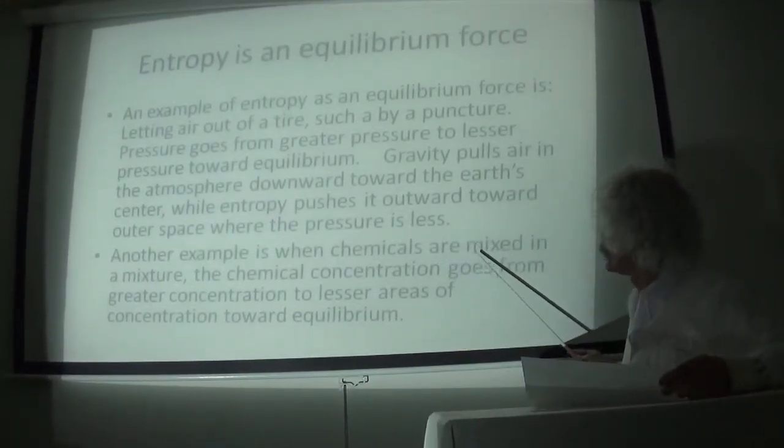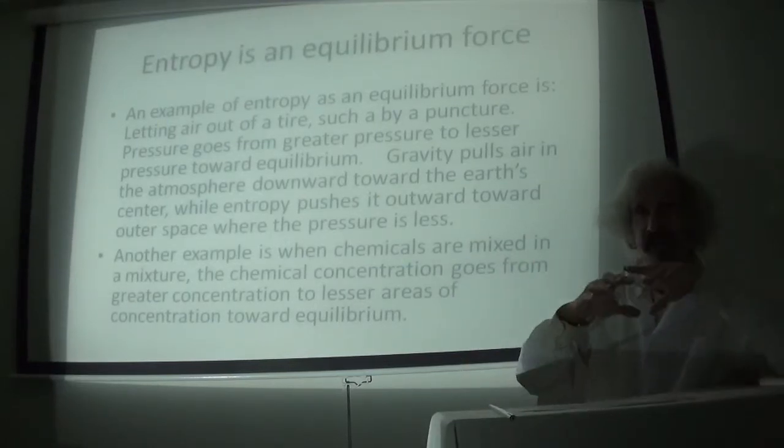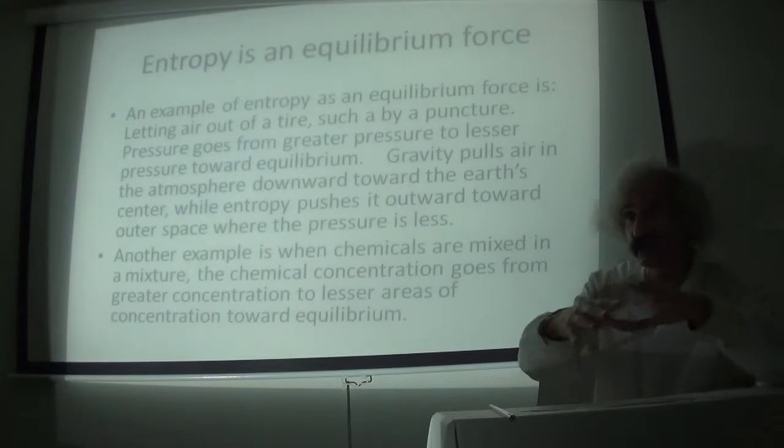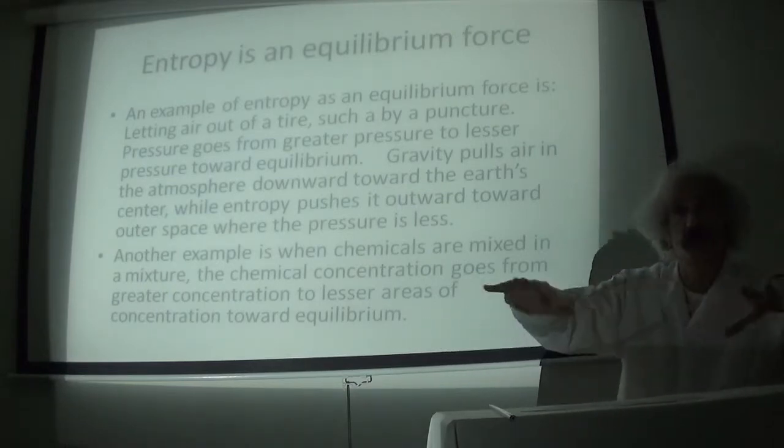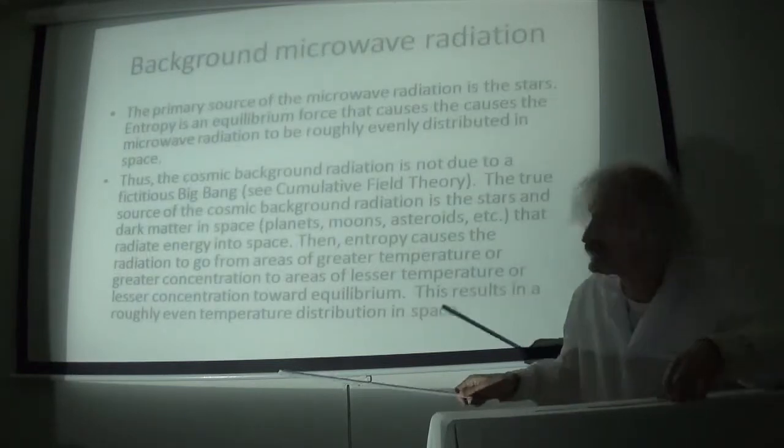Another example is a chemical mixture, where two chemicals are mixed, and then the chemical concentration will quickly go from areas of greater concentration to areas of lesser concentration toward equilibrium, where they'll be roughly equal throughout the system.